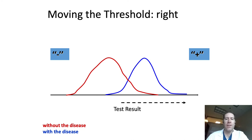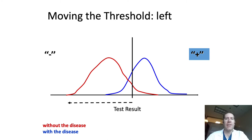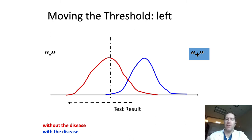What happens if we move the threshold to the left? Now all these patients to the right of the dotted line are considered positive. There are some men who are truly negative that test positive, though the vast majority of men who have the disease are testing positive. Moving the threshold even further, we're capturing almost every patient who has the disease — approaching 100% sensitivity. However, almost half of the men who do not have the disease are testing positive, meaning the specificity is about 50%. Depending on what threshold you choose, specificity can be forced up or down with a concomitant change in sensitivity.